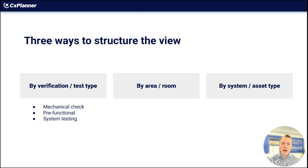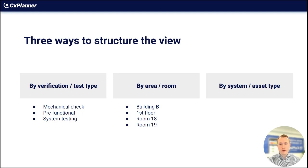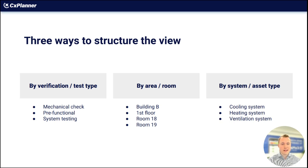The second way is by area or room — divided by building A, first floor, second floor, third floor, and so on, and you can also subdivide into specific rooms like a critical room. The third one is by asset or system type — the whole cooling system and then all the tests beneath that, heating system, and so on.